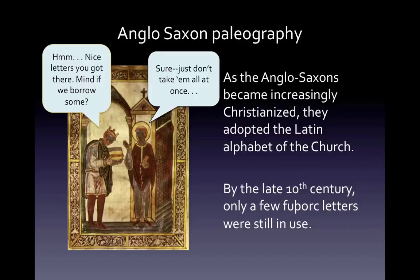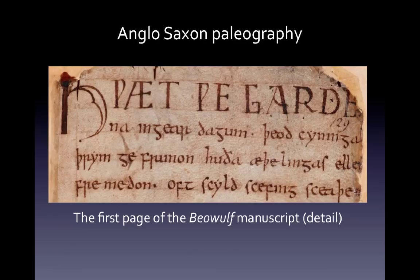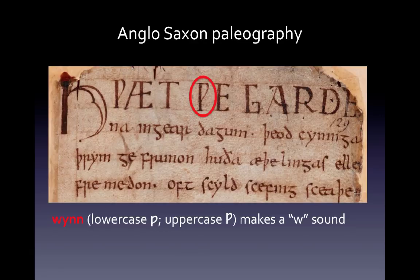On your screen is a photo of the first few lines of the Beowulf manuscript — the same lines that are at the top of page 2 in your book. Let's look at the word in the middle of the first line. The first letter of that word looks like a P, but it is called Wyn, and it makes a W sound. The word of which it is a part is 'Wē,' which means 'we' in modern English.